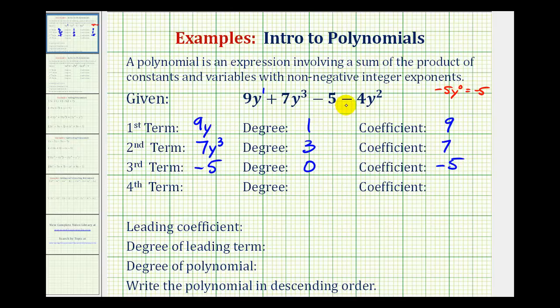The fourth term would be negative four y squared. So the degree would be degree two. And the coefficient is negative four.